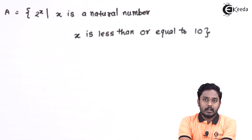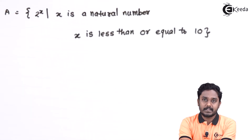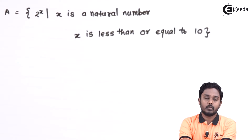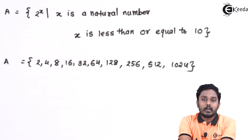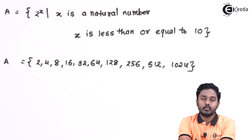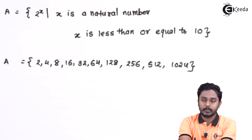Second, A contains the set of all powers of 2 such that x is less than or equal to 10. This set is also going to end at some point — it contains a finite number of elements. So set B is finite as well as countable.